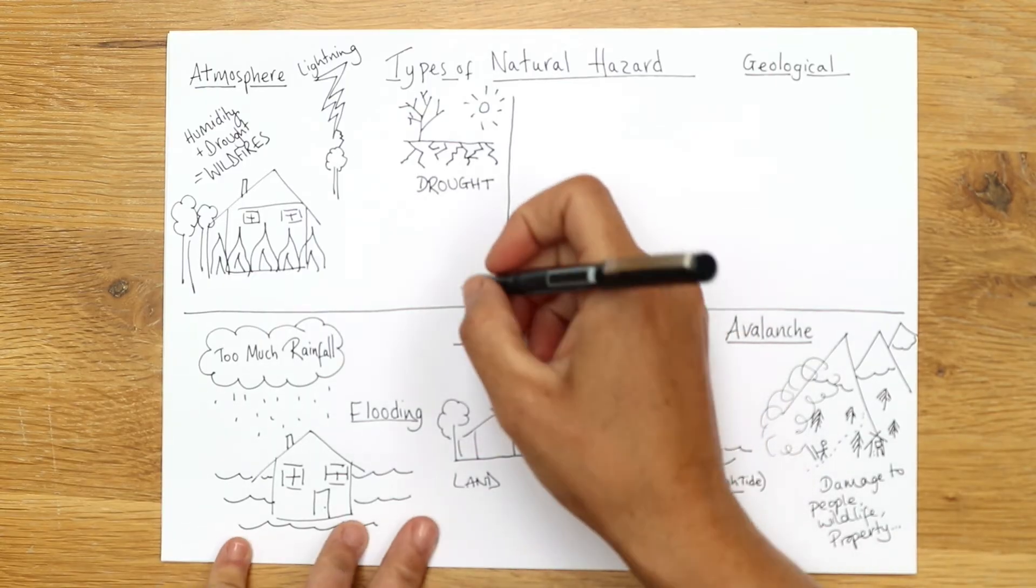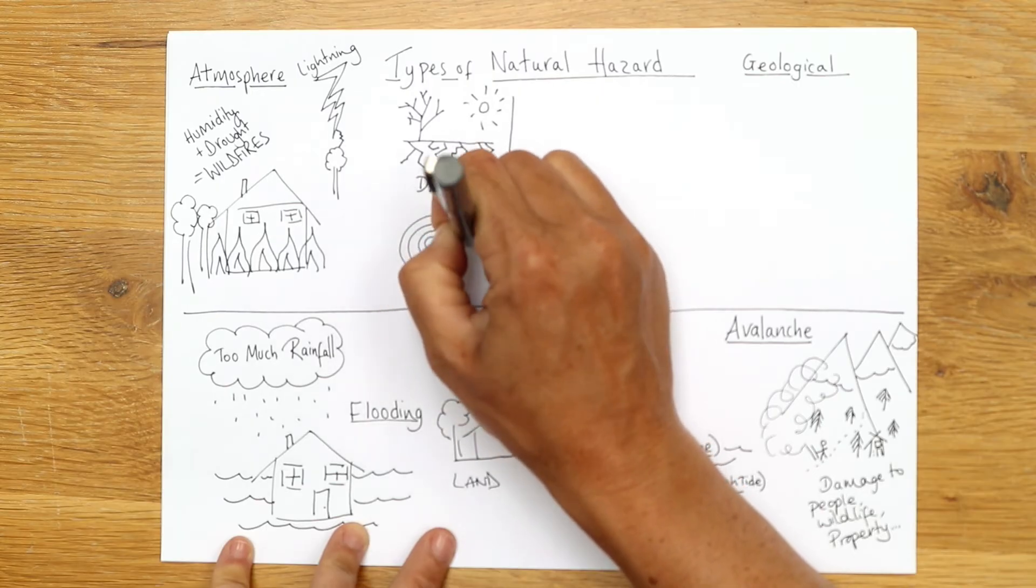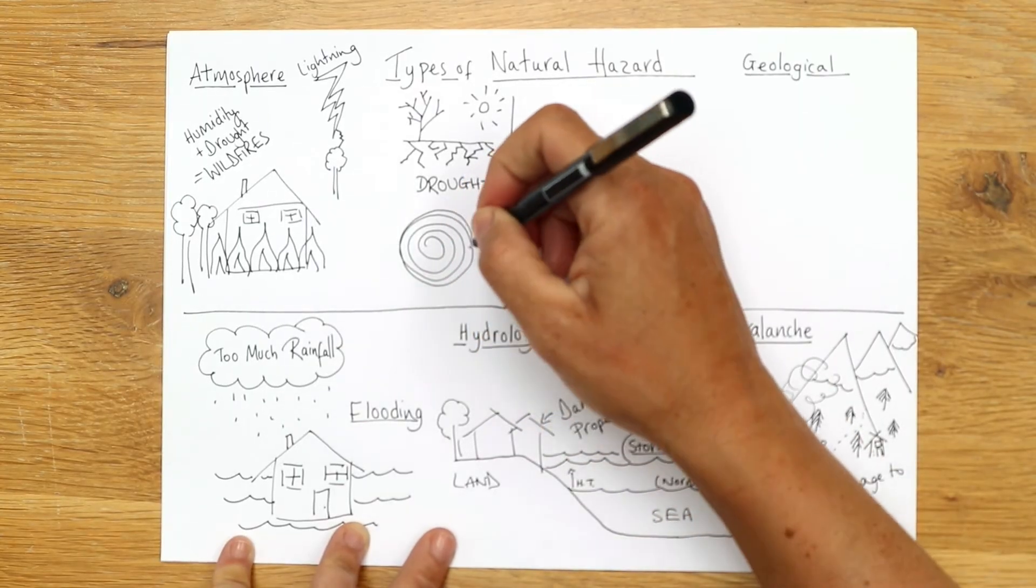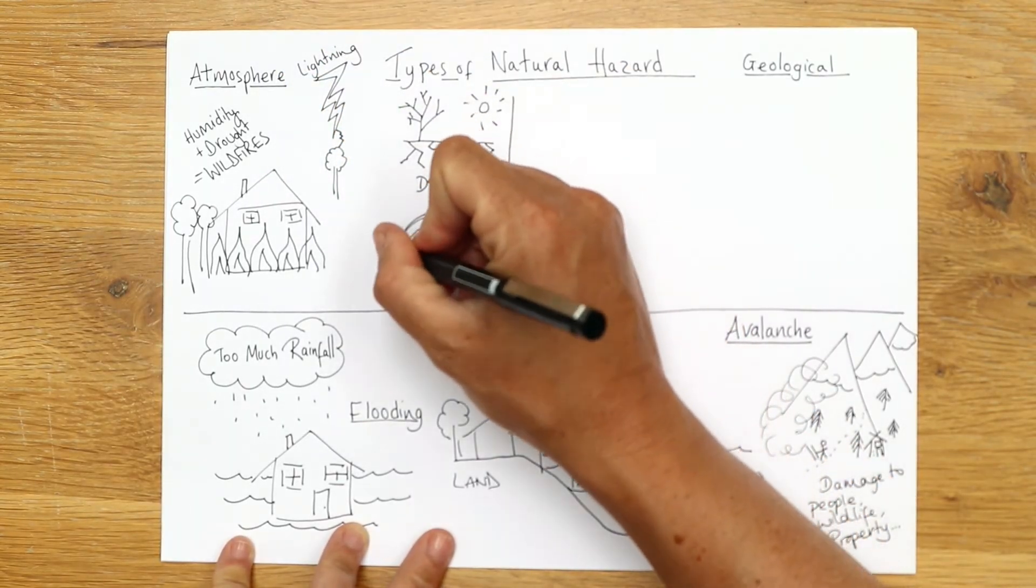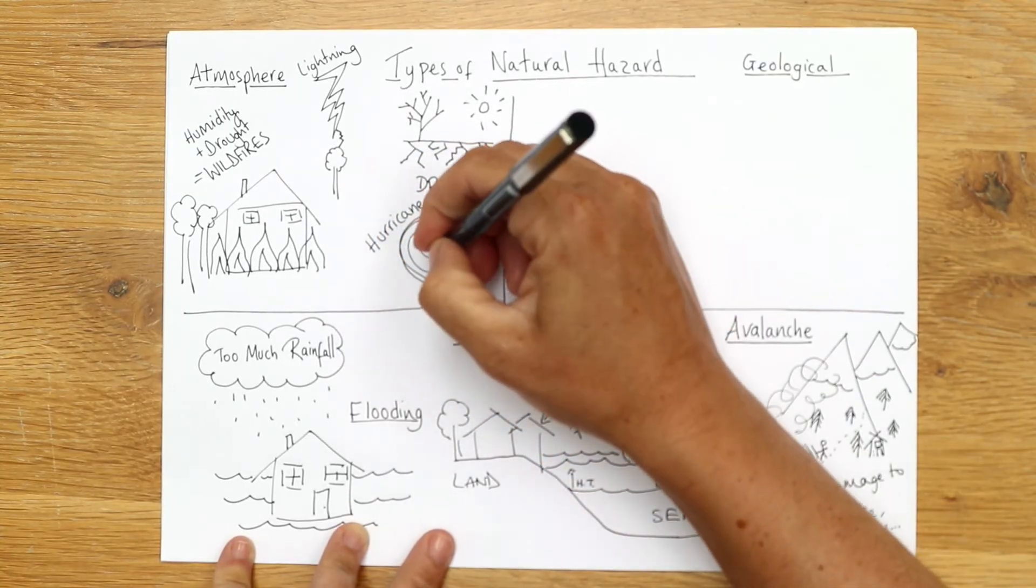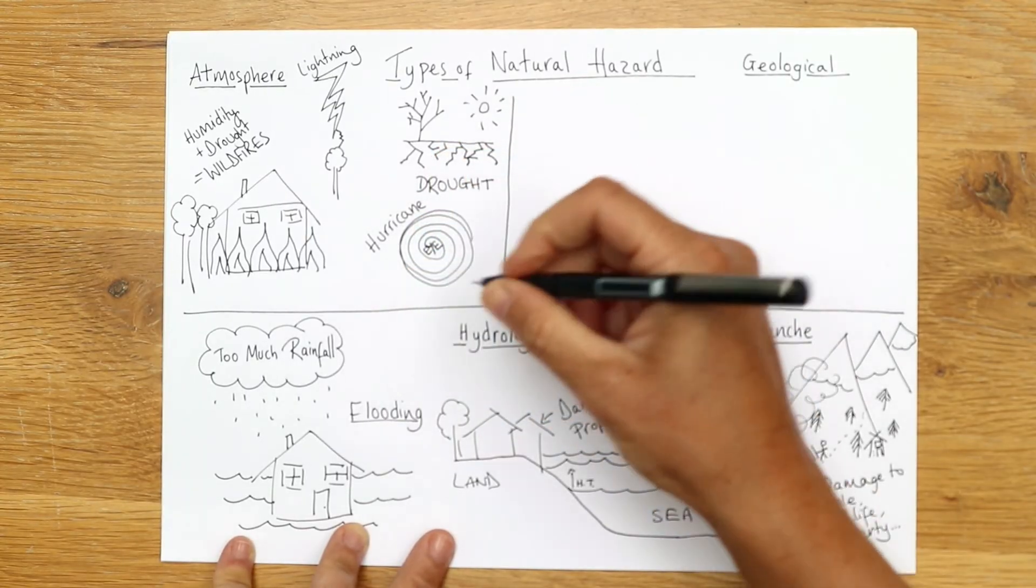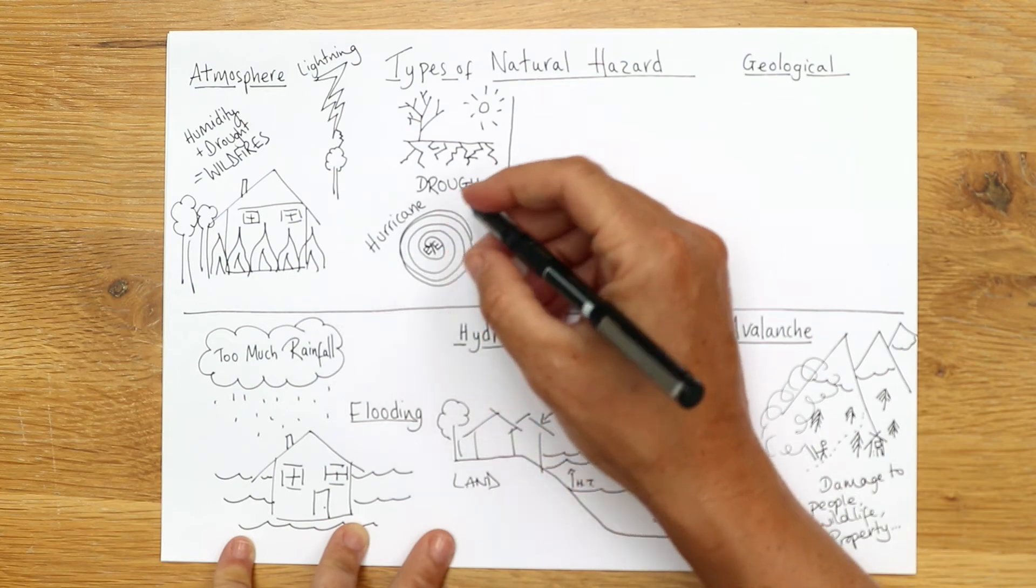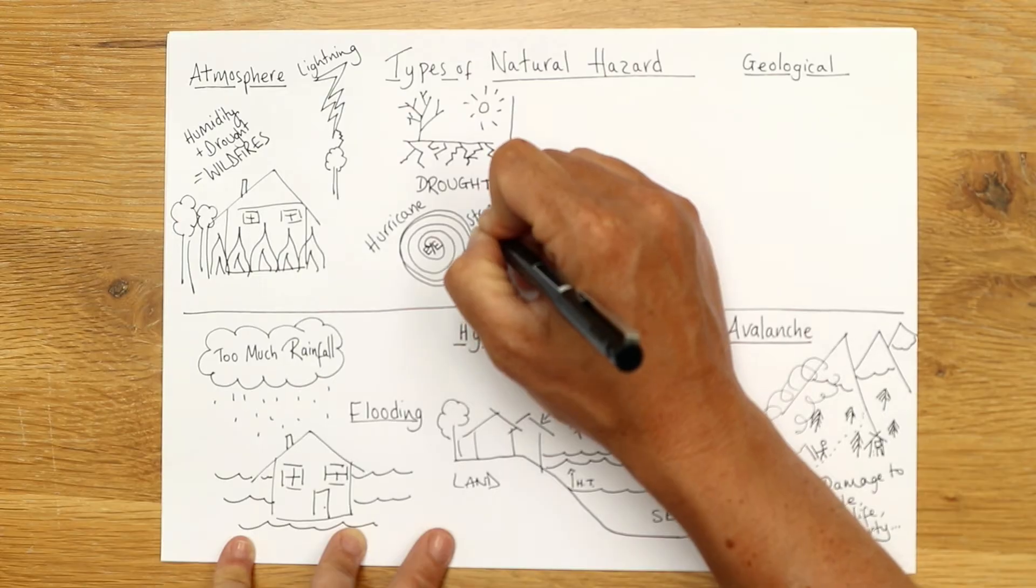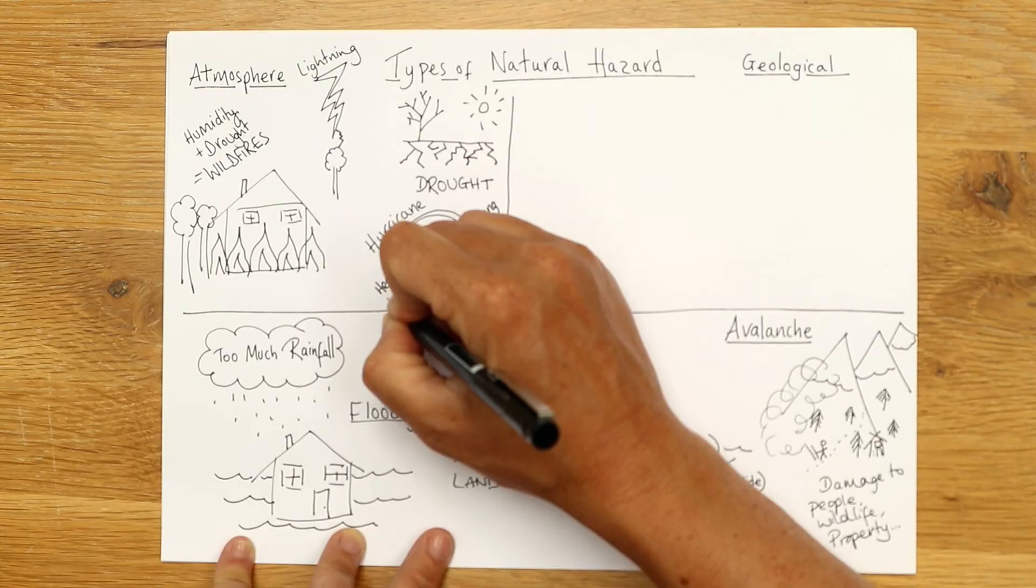Okay. And then the last one, now this one, a little bit harder to draw, but basically something like that. Imagine we're in space looking down on top of this, it's in the atmosphere and it is called a hurricane. Now, a hurricane, if you look at it from space, it has this eye. Now in the eye, it's lovely and calm, but around the outside, there are really seriously strong winds and there is really heavy rainfall.